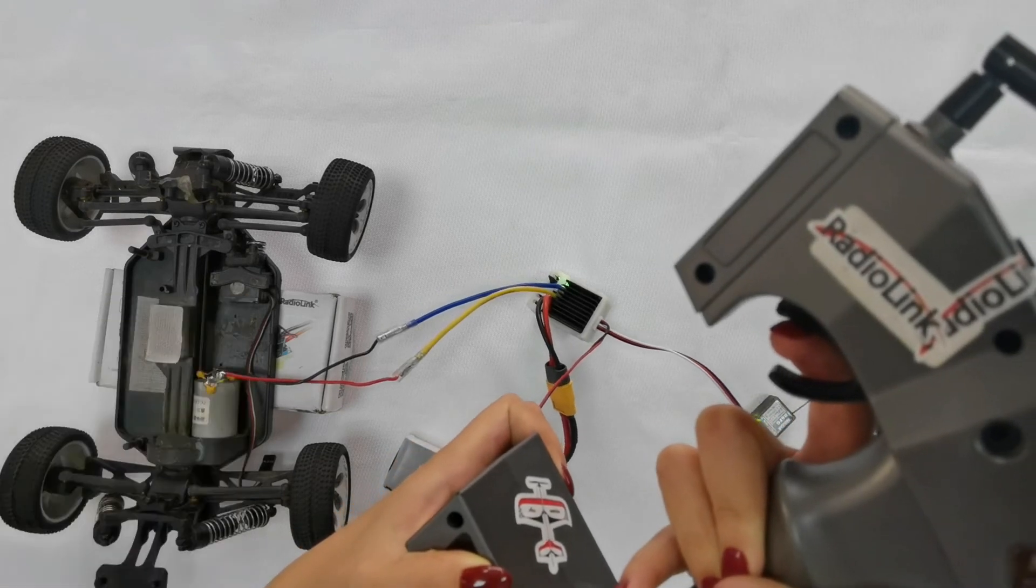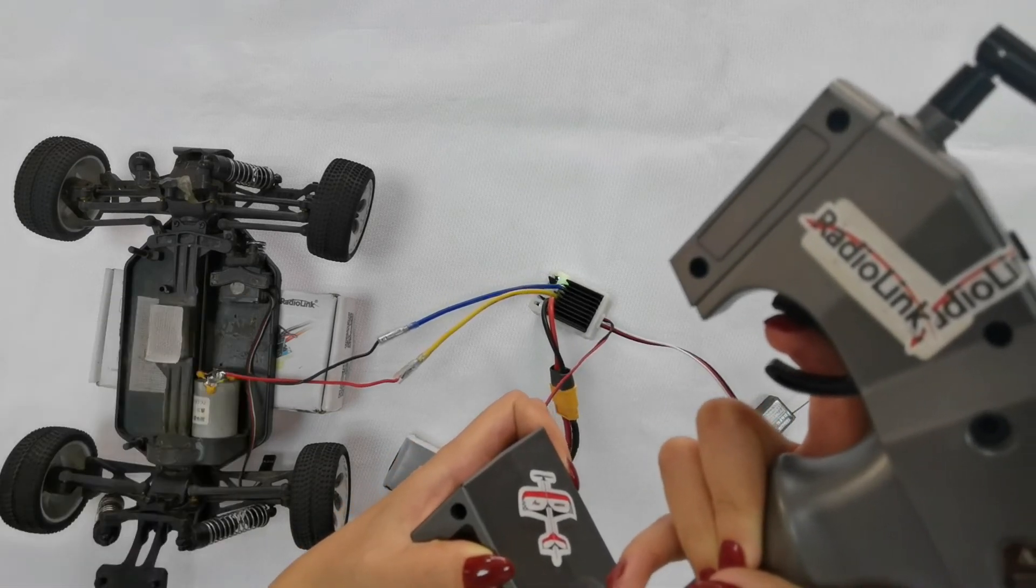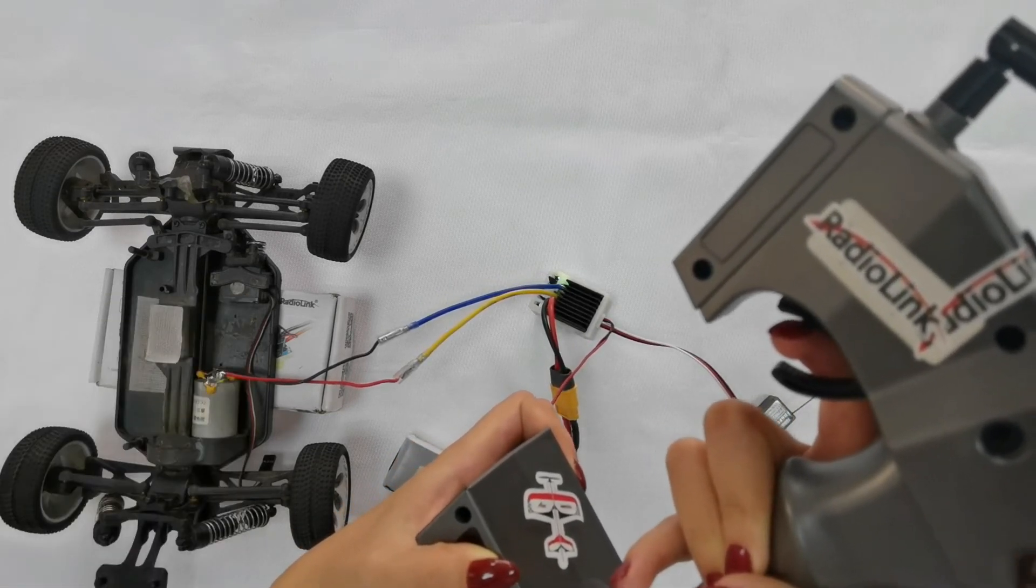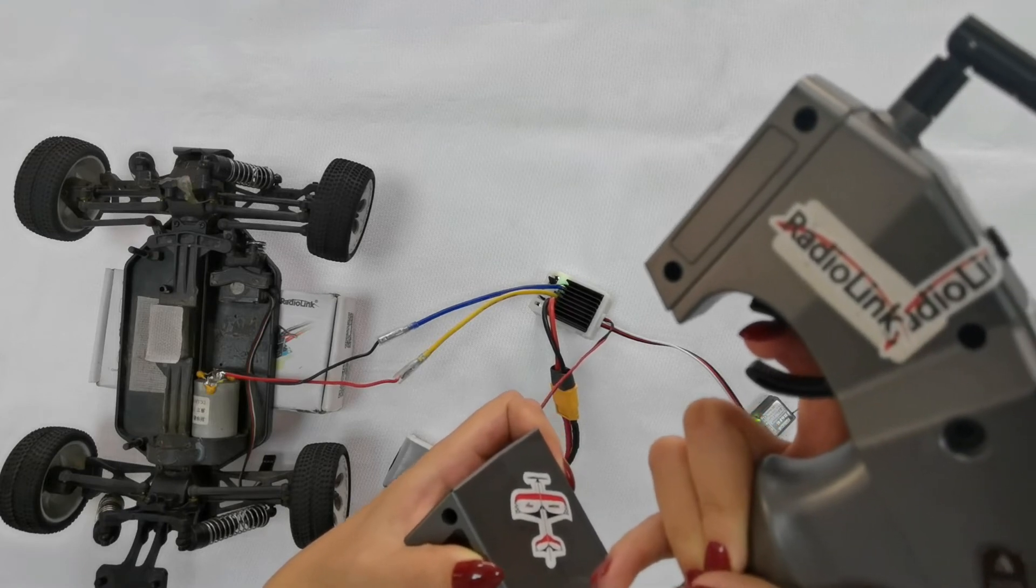Keep it at the lowest position. The motor makes two beeps again. Then keep the throttle in the neutral position.